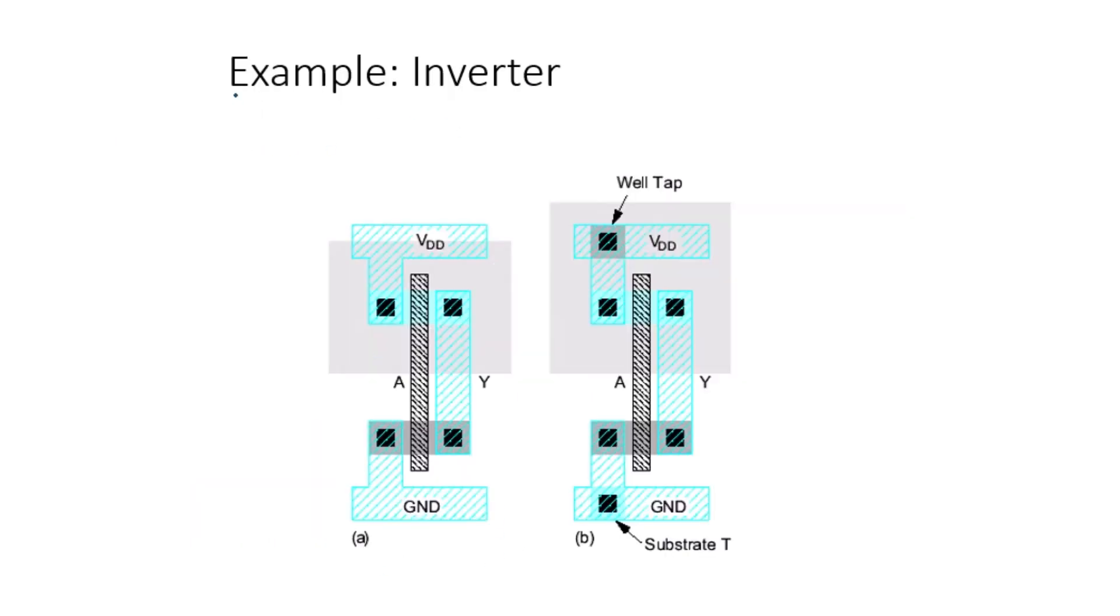Now let's take a look at a common example: CMOS inverter layout. In a CMOS inverter, one NMOS and one PMOS are connected in series. The NMOS transistor is placed in an N-well and the PMOS transistor is placed in a P-well. This layout allows the two transistors to switch complementary signals, creating the inversion effect.